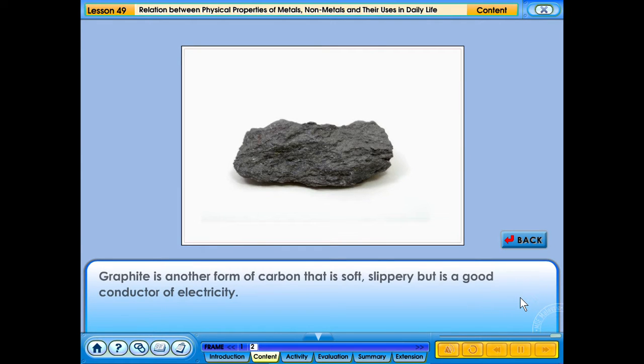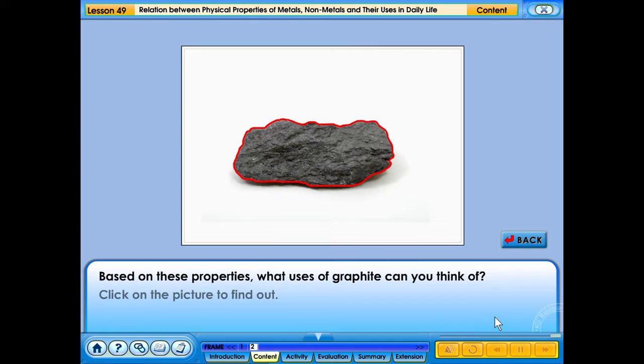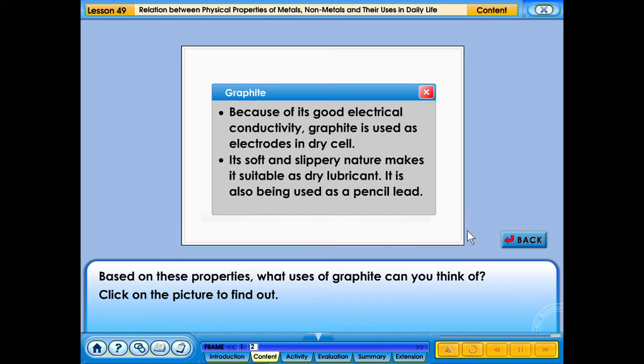Graphite is another form of carbon that is soft, slippery, but is a good conductor of electricity. Based on these properties, what uses of graphite can you think of? Click on the picture to find out. Because of its good electrical conductivity, graphite is used as electrodes in dry cells. Its soft and slippery nature makes it suitable as a dry lubricant. It is also being used as a pencil lead.